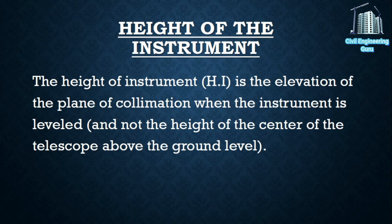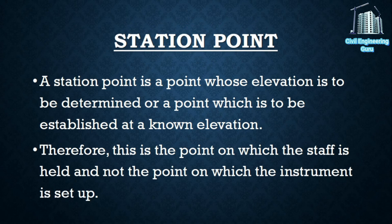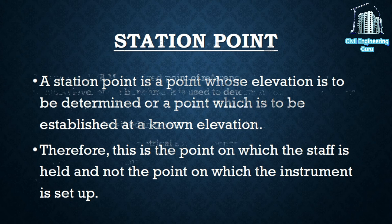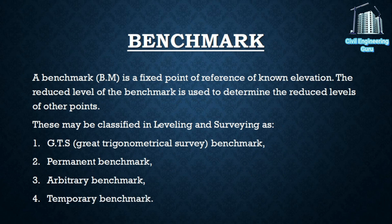Height of instrument: the height of the instrument is the elevation of the plane of collimation when the instrument is leveled, and not the height of the center of the telescope above the ground level. Station point: a station point is a point whose elevation is to be determined, or a point which is to be established at a known elevation. Therefore, this is the point on which the staff is held, and not the point on which the instrument is set up.